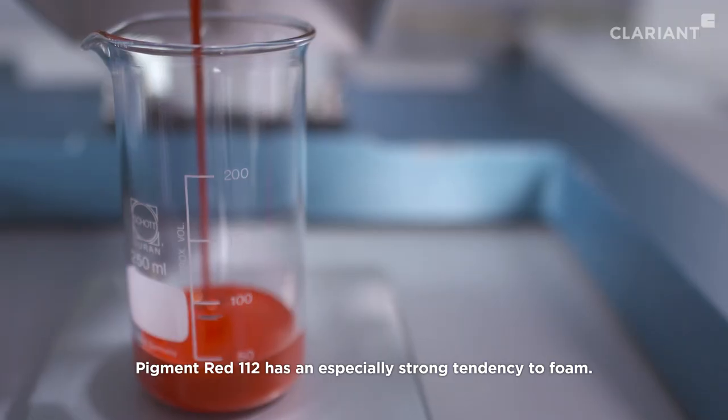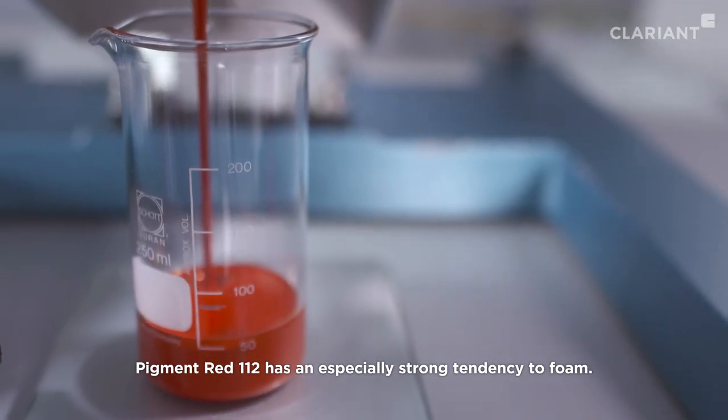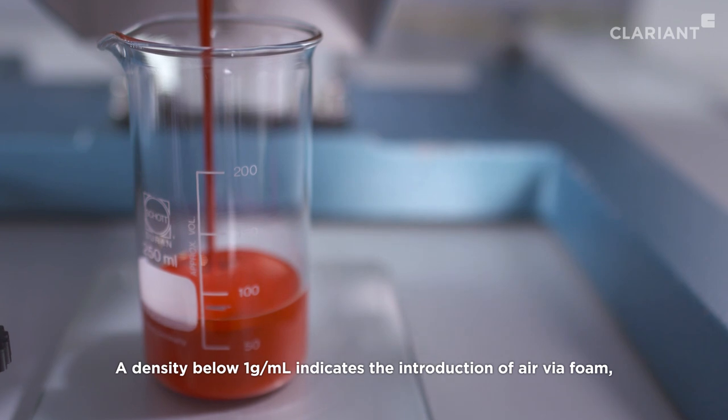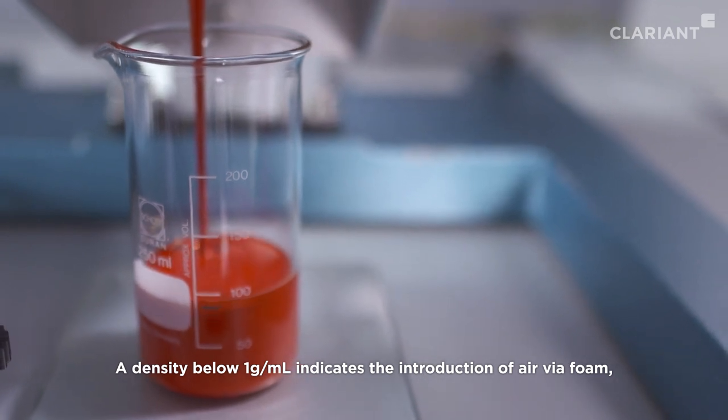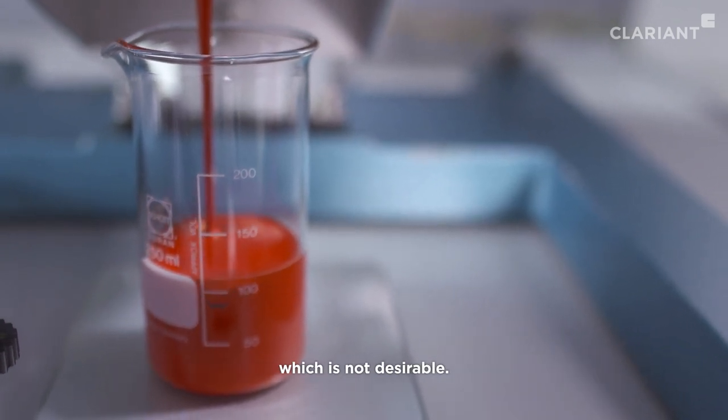Pigment Red 112 has an especially strong tendency to foam. A density below 1 gram per milliliter indicates the introduction of air via foam, which is not desirable.